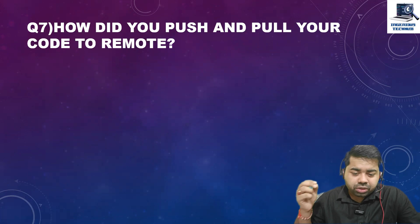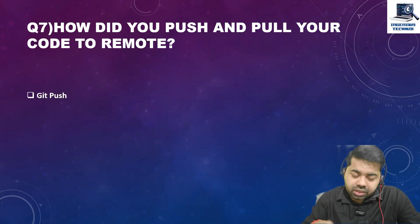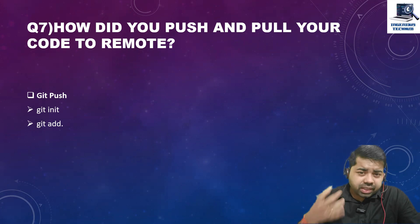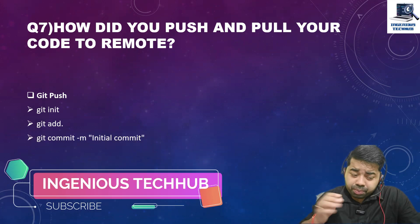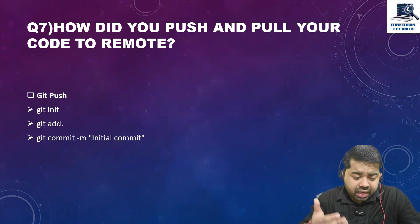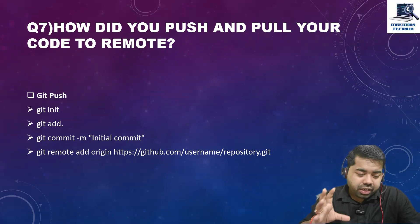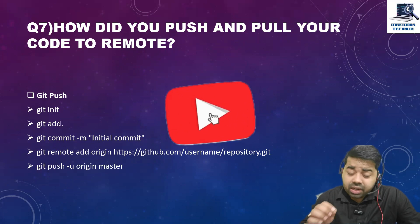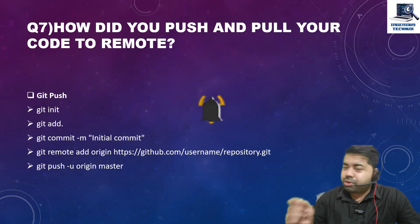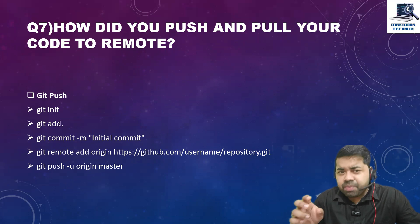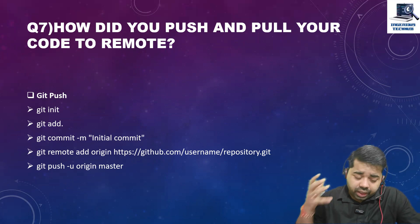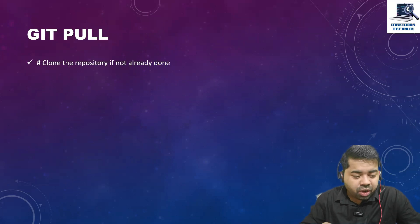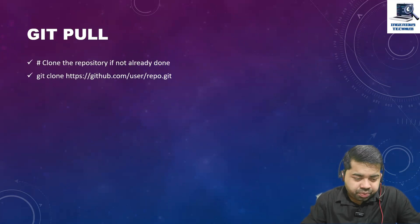The next question is: how did you push and pull code to your remote repository? You should have basic knowledge of Git. For pushing, the steps are: git init, git add, git commit, git remote add origin with the URL, and then git push origin master. Search the Git documentation and do hands-on practice with these commands.